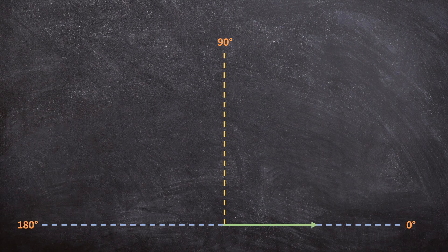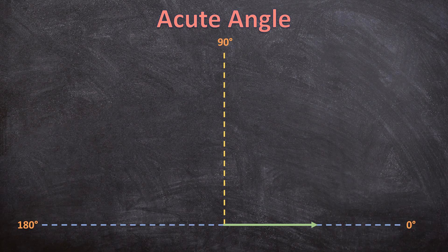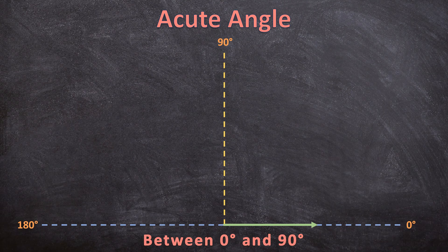The first angle we're going to look at is the acute angle. An acute angle is between zero and 90 degrees. If I rotate my green ray counterclockwise, I form an angle — and this is an acute angle, because this angle is between zero and 90 degrees.